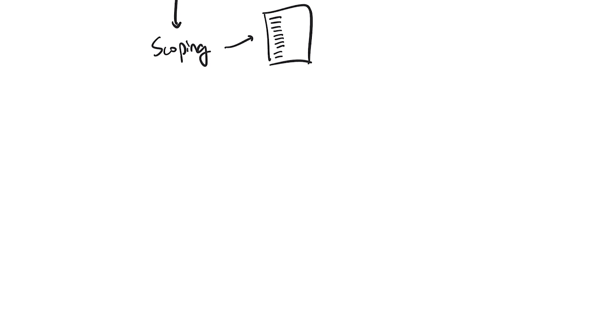After scoping, we move on to maybe mapping. The idea is that you take the keywords you just scoped out and create a hypothesis about how those words might be connected with each other — a very basic scaffold. It's called a 'maybe' map because you don't have to be right. In fact, you're almost definitely going to be wrong, but it gets your brain thinking about how it all fits together in a big picture.